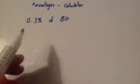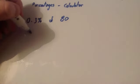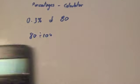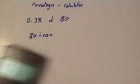Our last example is to work out 0.3% of 80. So again, you divide by 100 to get 1%. So you do 80 divided by 100, which equals 0.8.